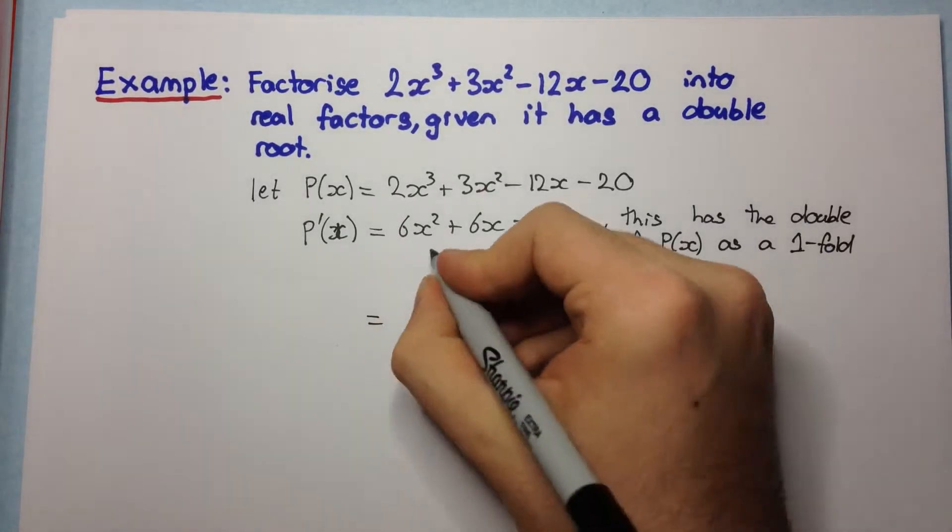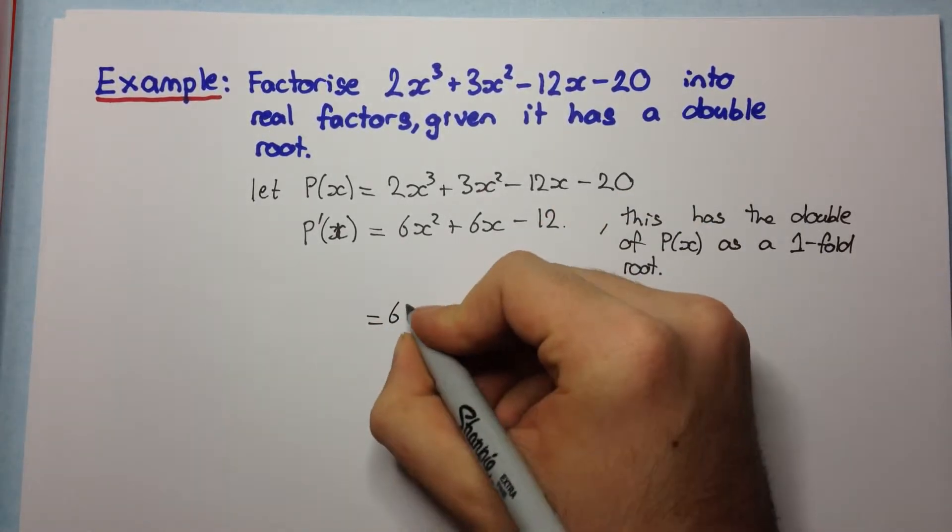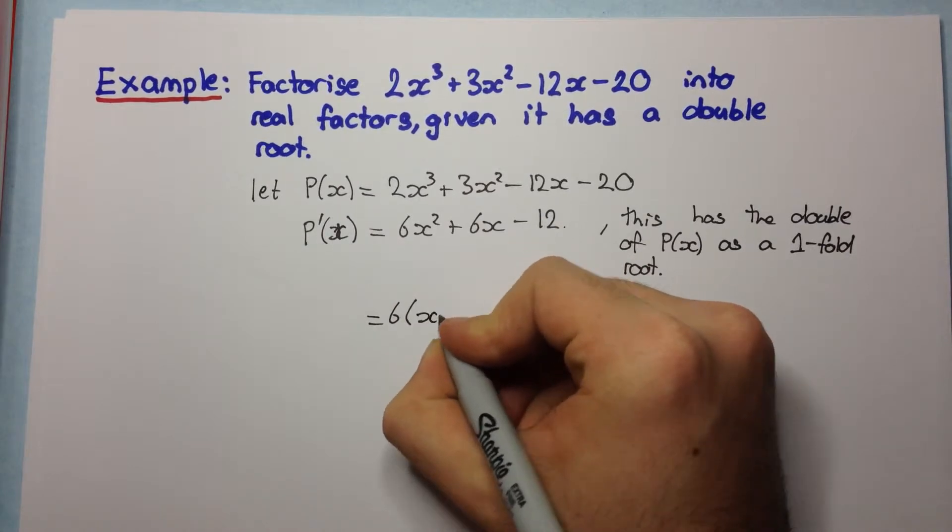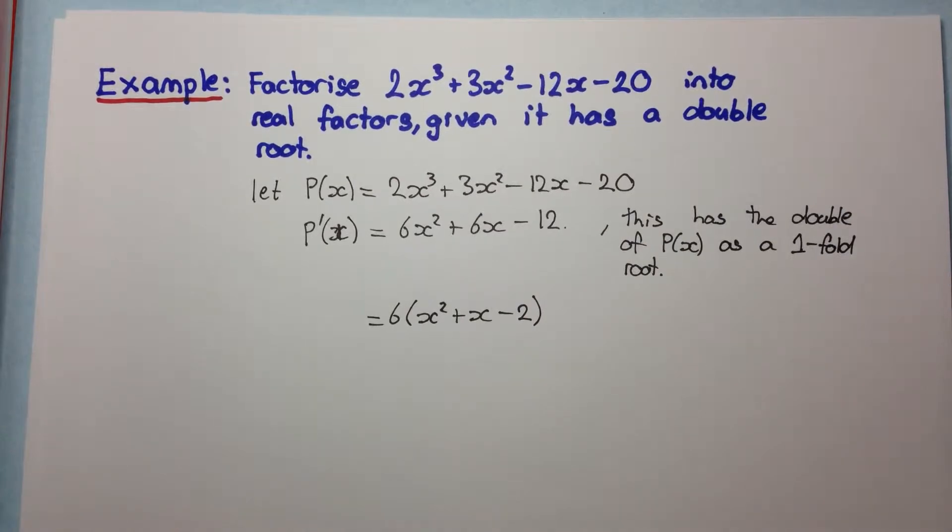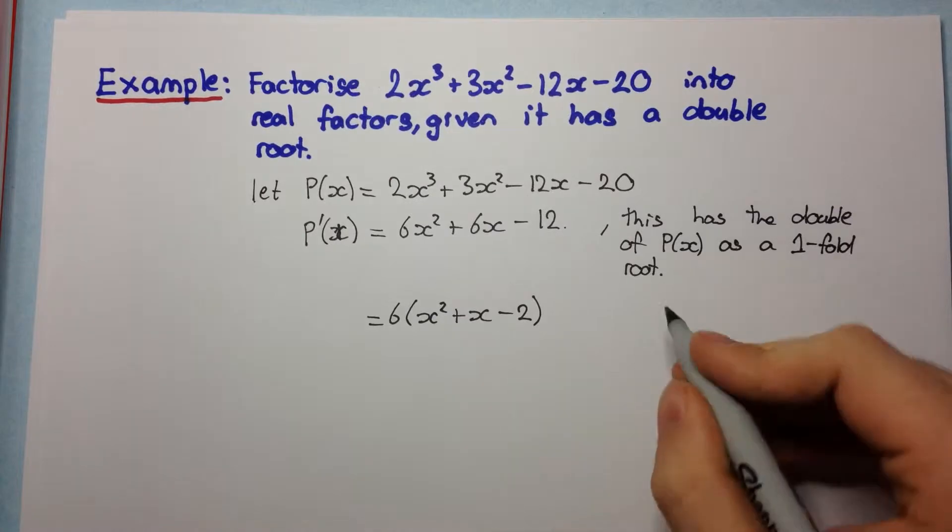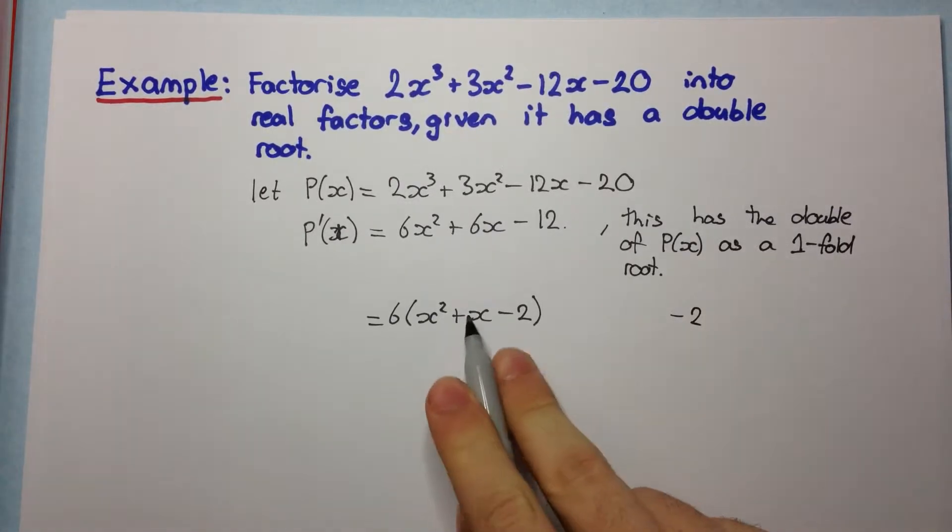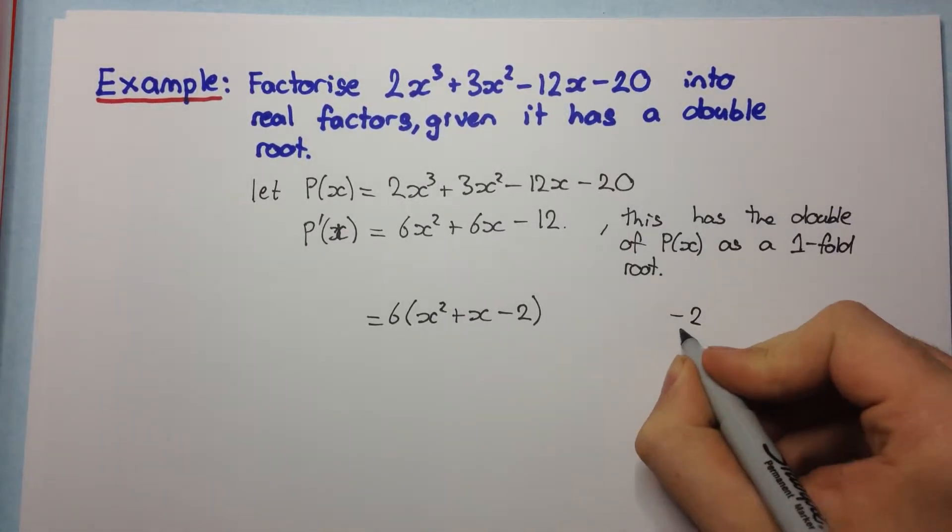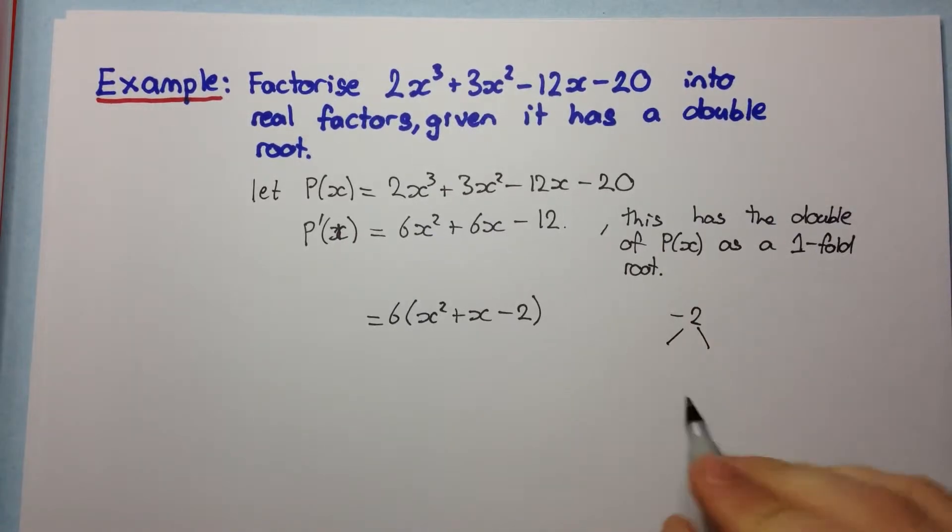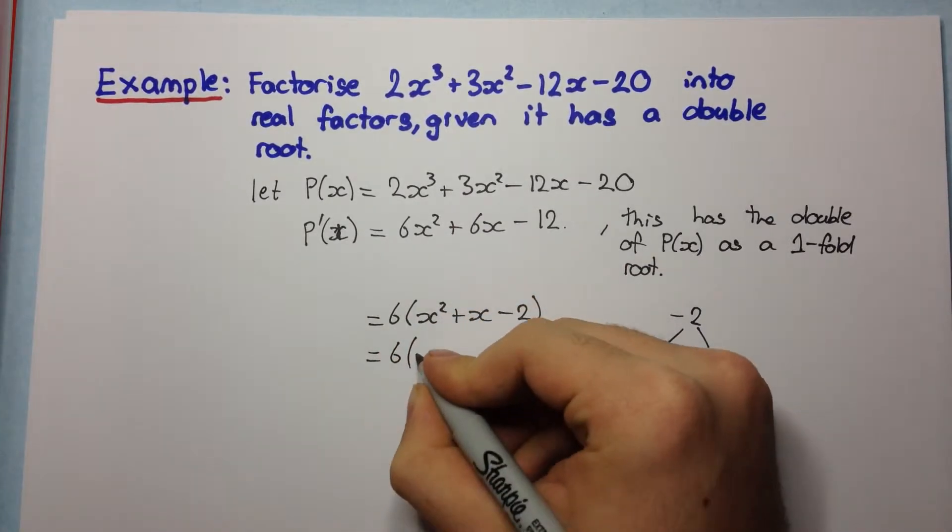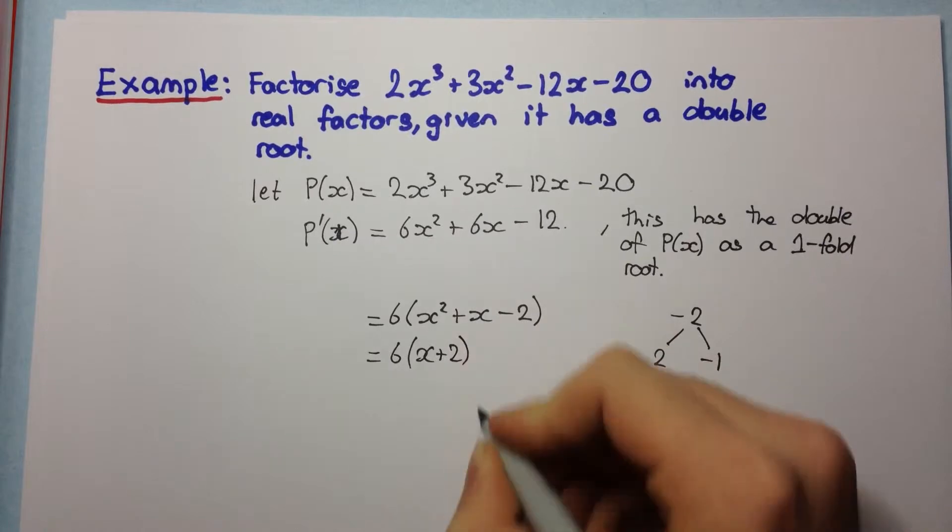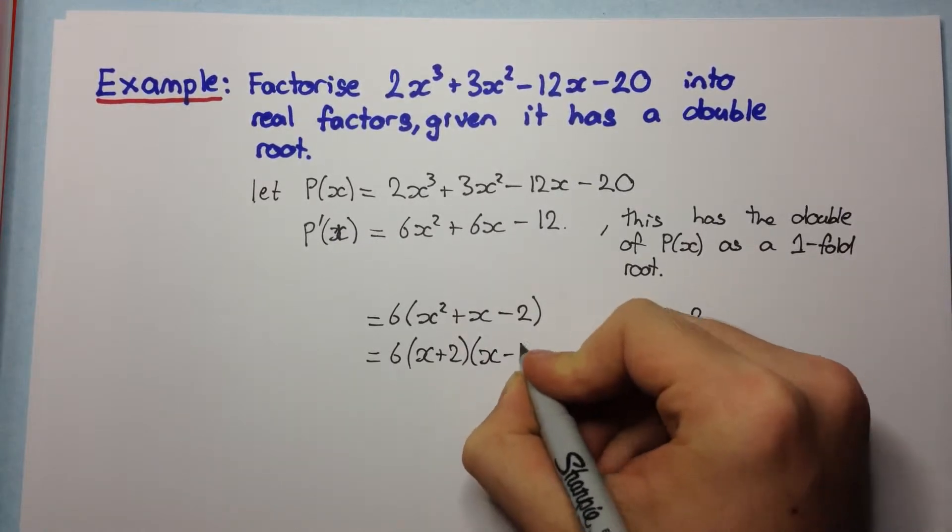So P'(x) is equal to 6x² + 6x - 12. And this has the double root of P(x) as a one fold root. Now we can take out a 6 and we get 6 into x² + x - 2. To factorize this, we need to find two numbers that multiply to give -2 and add to give +1. So these two numbers would be +2 and -1. So we have 6 into (x + 2) times (x - 1).